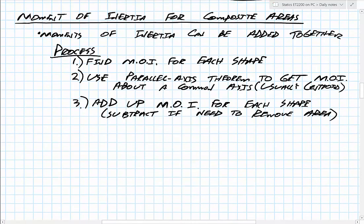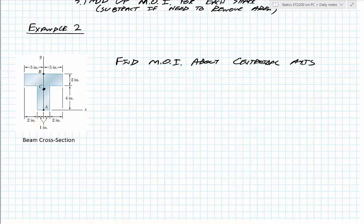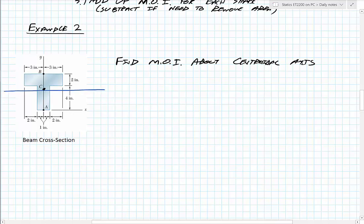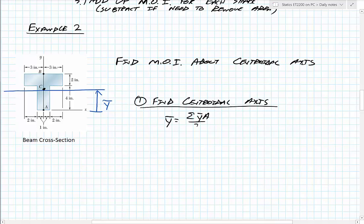For example two, we have a T-shape and we're trying to find the moment of inertia about its centroidal axis. The first step is to figure out where the centroidal axis actually is, which we call Y-bar — the distance from the X-axis up to that centroidal axis. Our equation for that is: Y-bar equals the sum of (y̅ × A) divided by the sum of areas.